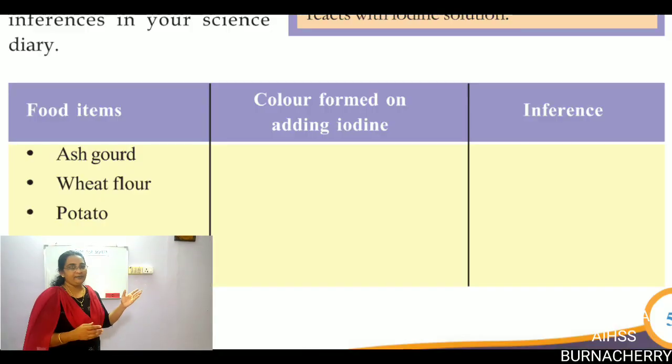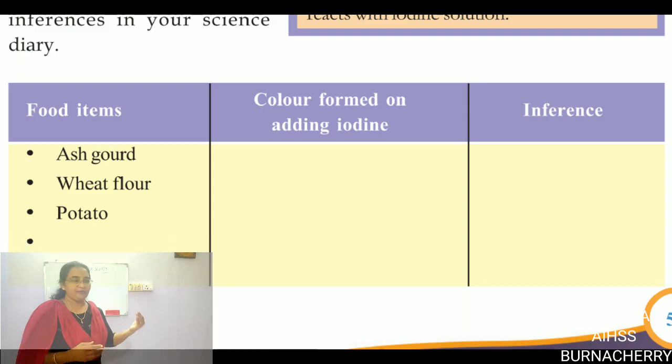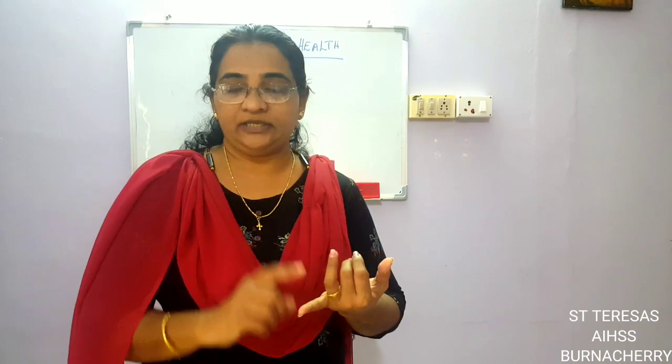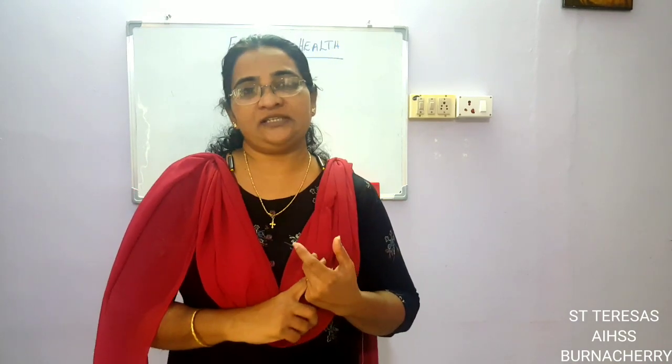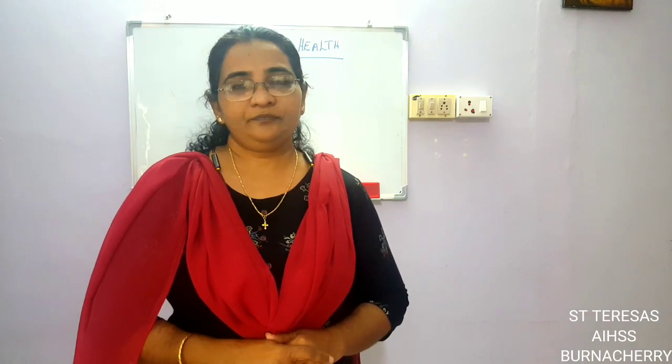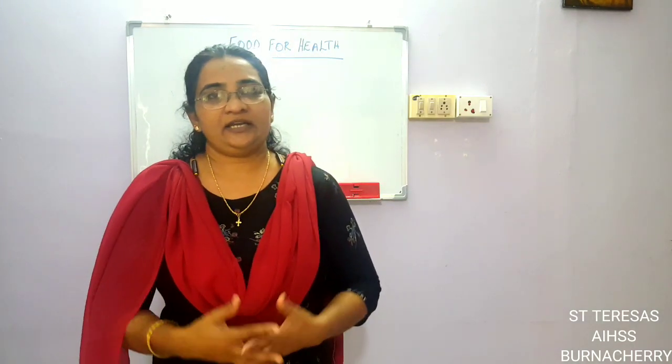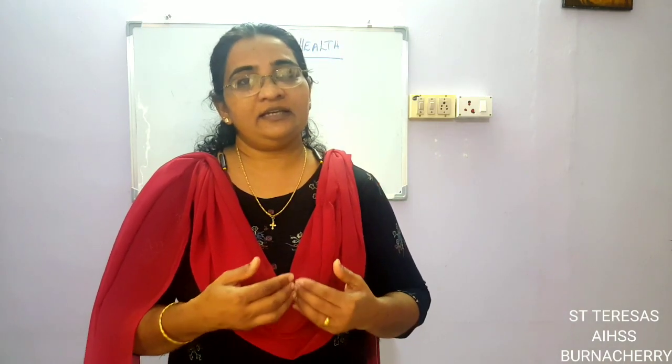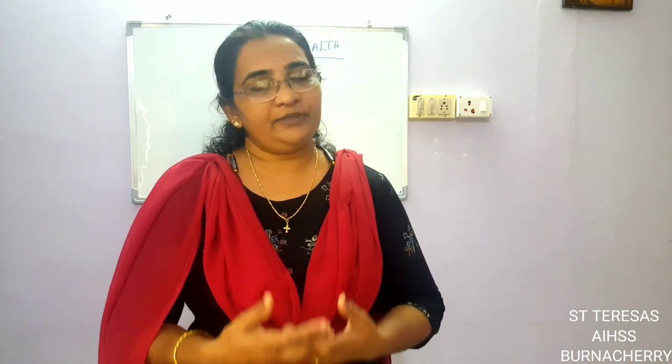When you do your experiment, take different items. There is a table in the textbook — look at that table and write down your results. You can take different vegetables, do the iodine test, and find out if they contain carbohydrates, then complete the table. So we understood what carbohydrate is — carbohydrate is present in the form of starch, stored in different parts of the plant, and it is a combination of carbon, hydrogen, and oxygen. This is the class for today, children. I hope you have understood. Thank you.